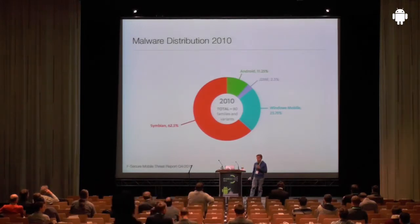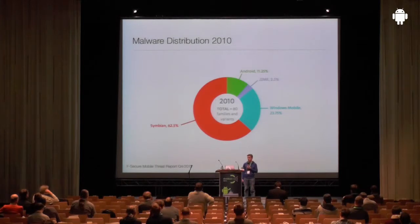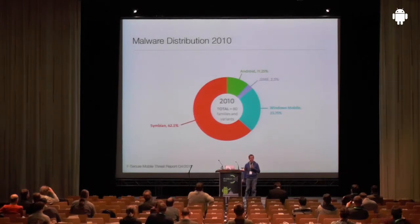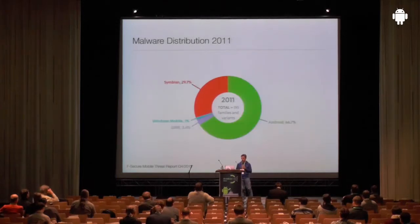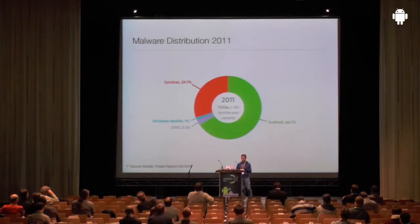If we look back three years and see how malware distribution was in 2010, we see that the majority of malware experienced in the wild was targeting Symbian. At that time, Nokia was still very prominent in the smartphone market with its Symbian OS. But Android already accounted for roughly 12% of the malware total — out of 80 different samples. This already changed one year later, when Android caught up and two-thirds of roughly 200 malware samples were for Android, with Symbian still very strong.